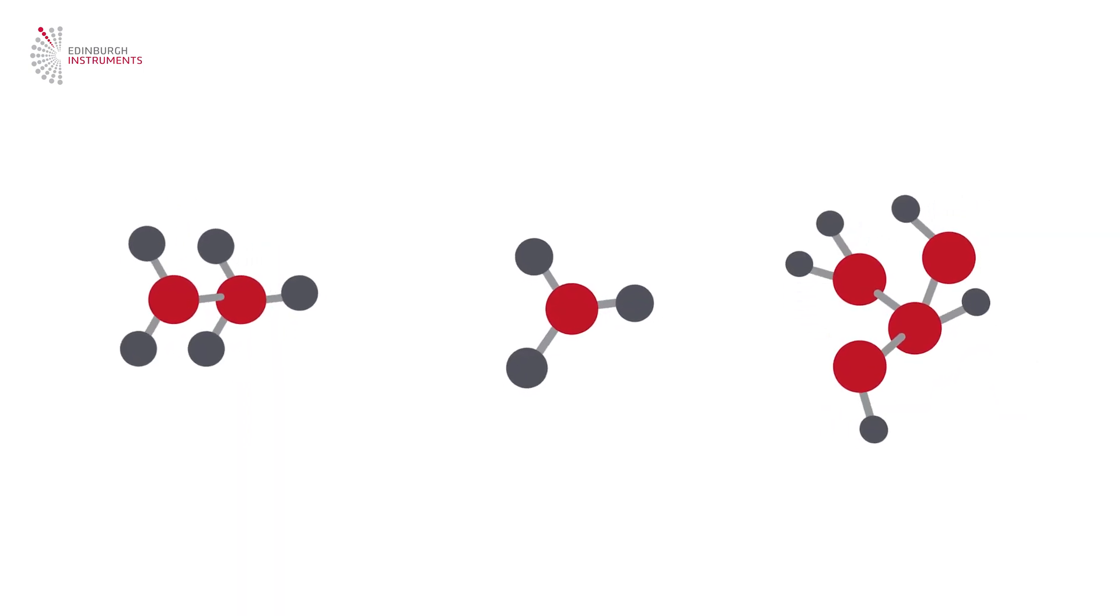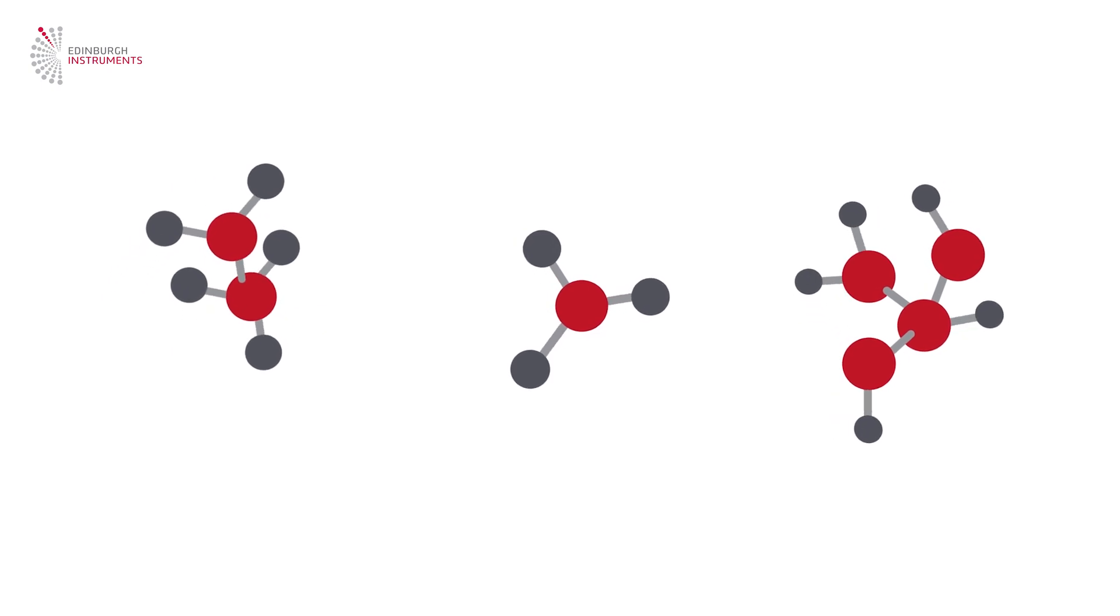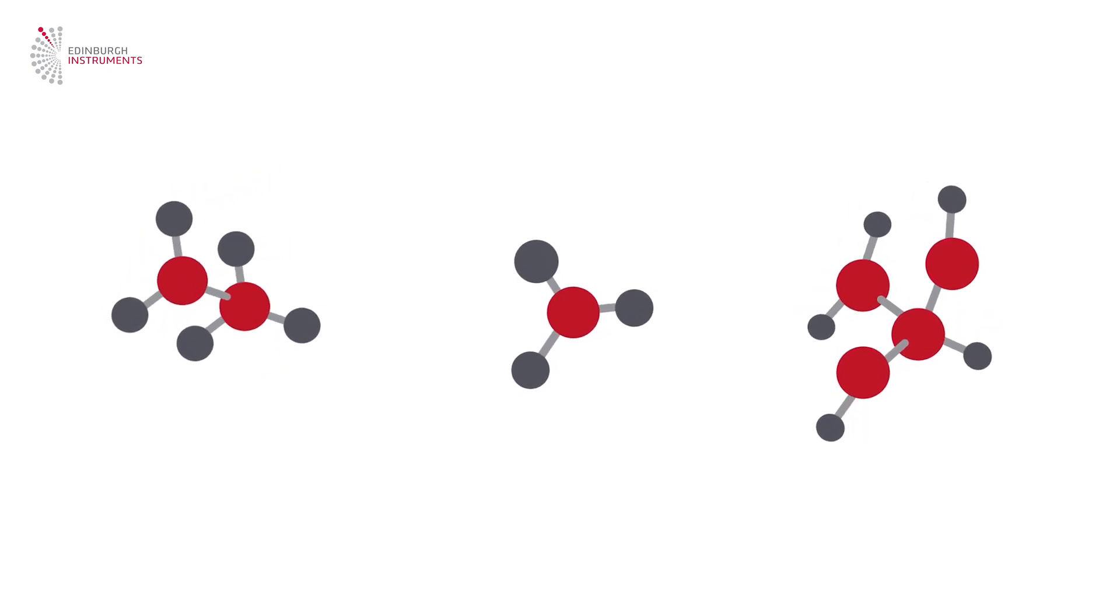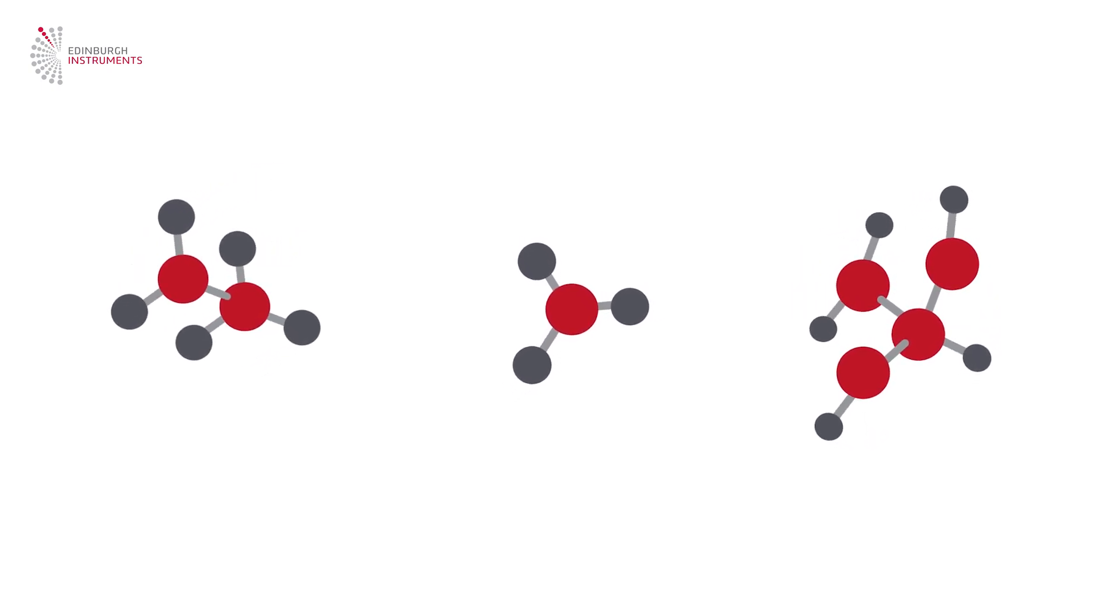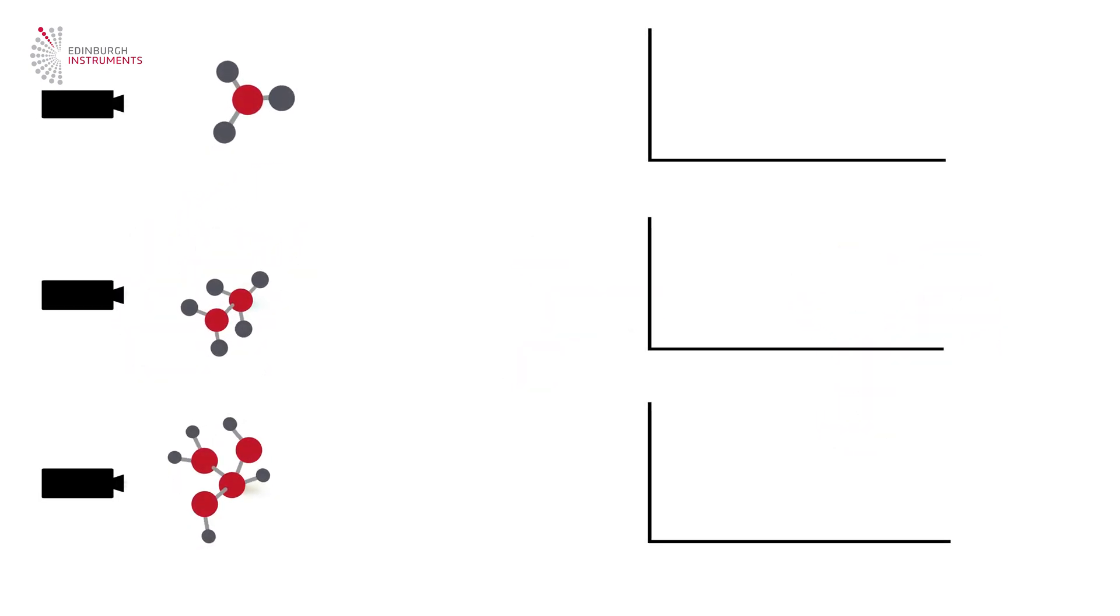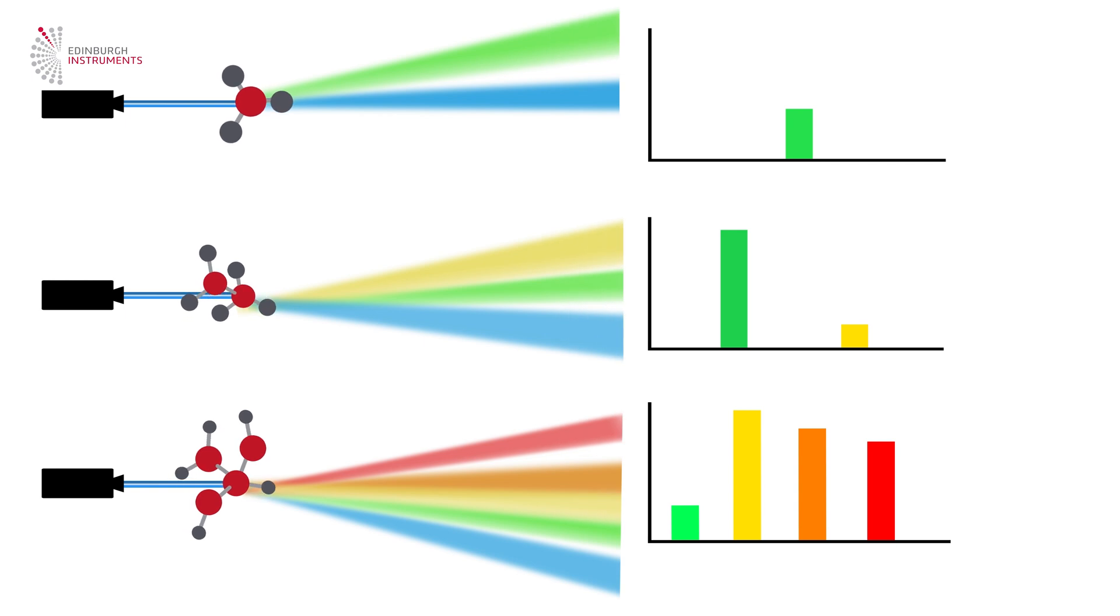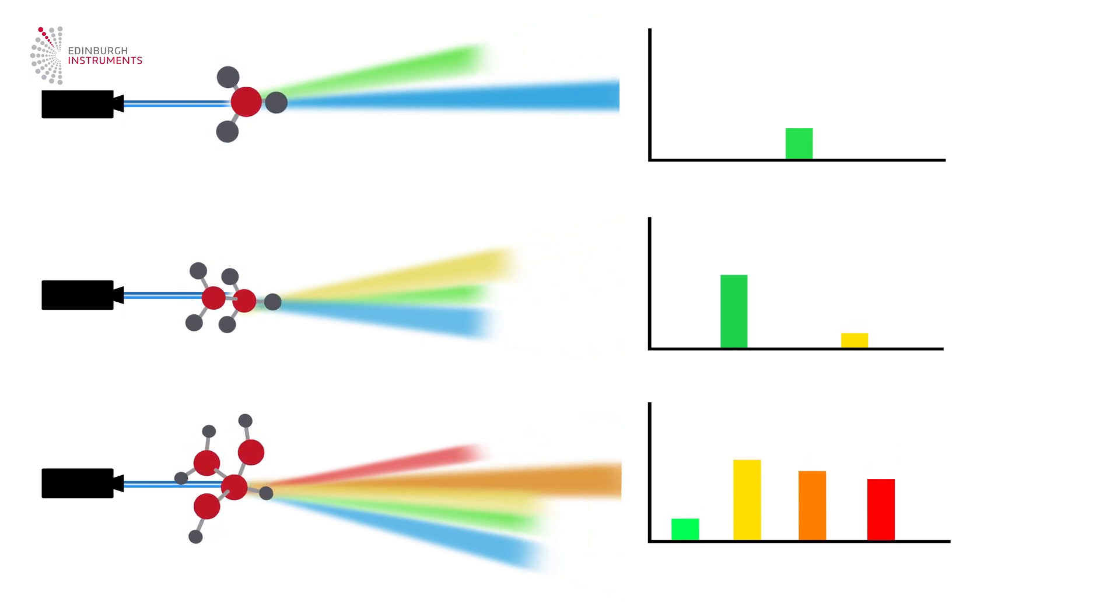Every molecule has a unique set of vibrations depending on its molecular structure, giving each molecule an identifiably unique Raman spectrum. We can measure the Raman spectrum by exciting the molecules with a monochromatic laser and recording the Raman scattered light.